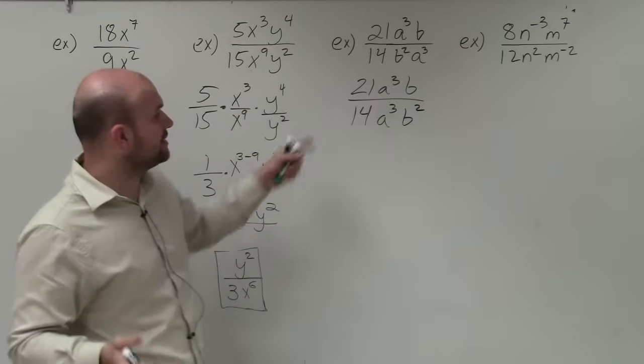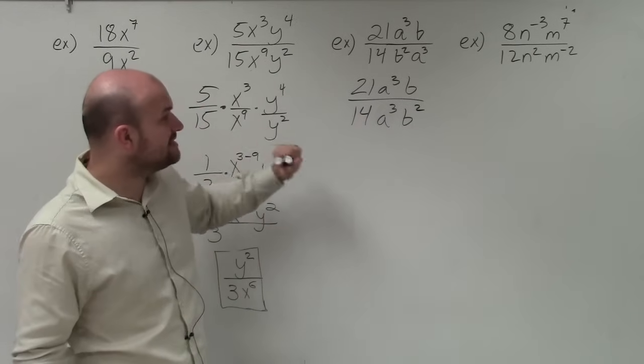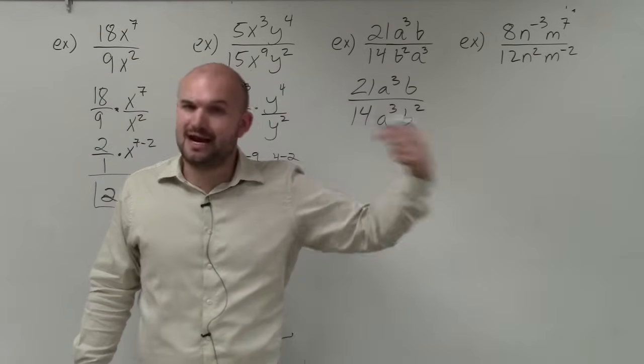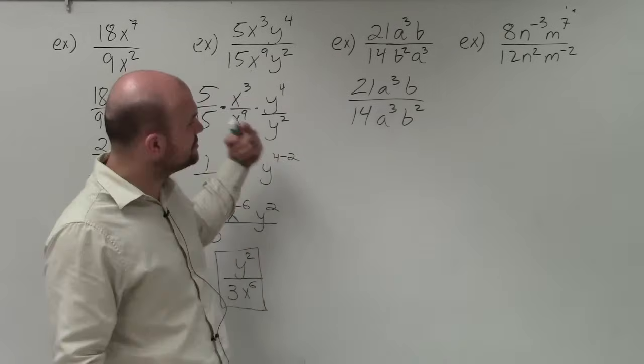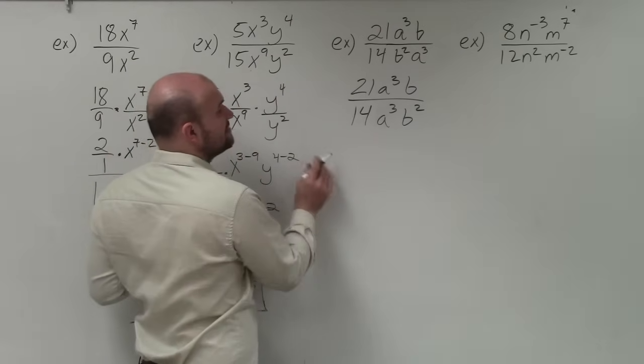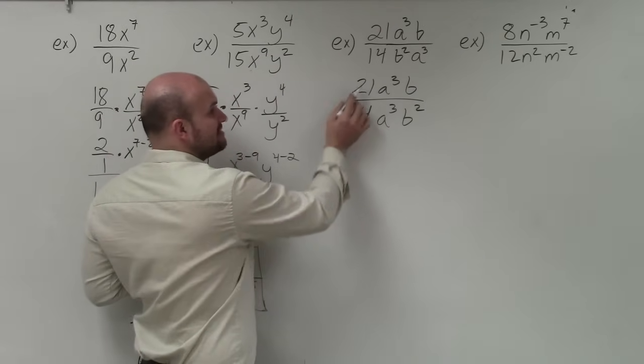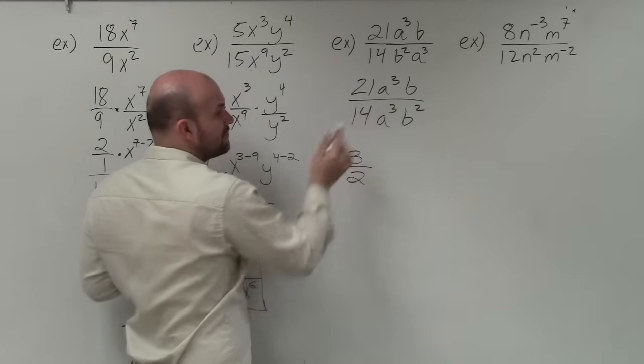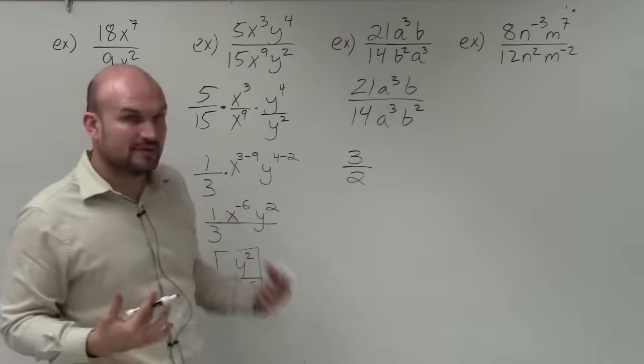So now in this case, again, we are going to simplify this. Now, in this case, though, 14 does not evenly divide into 21. So I want to look to see if, well, can I reduce these? Is there a number that divides into both of them? And yes, a number that divides into both of them is 7. 7 divides into 21 three times, and 7 divides into 14 twice. So 21 over 14 can be reduced to 3 halves.